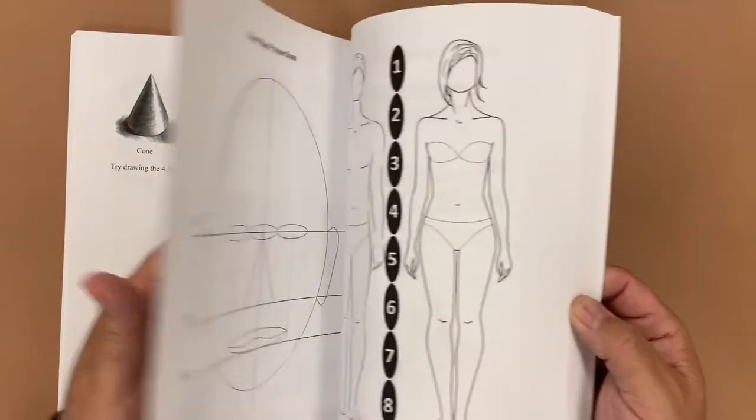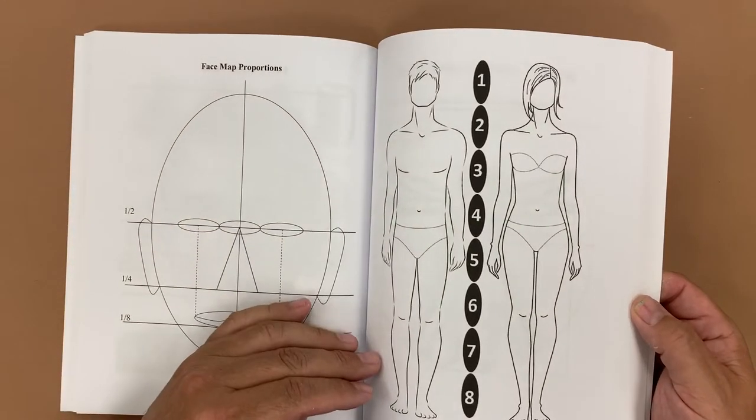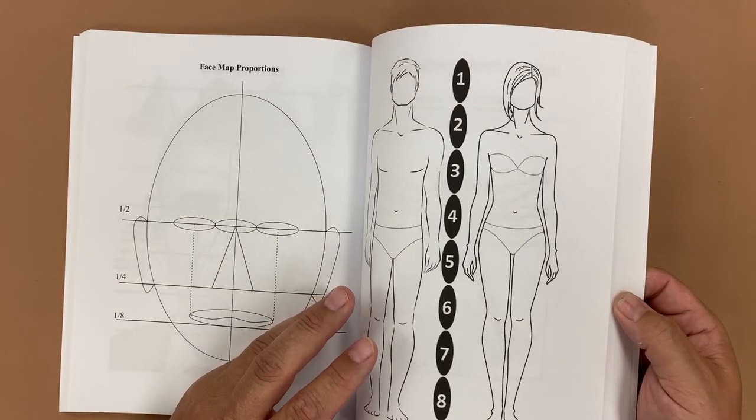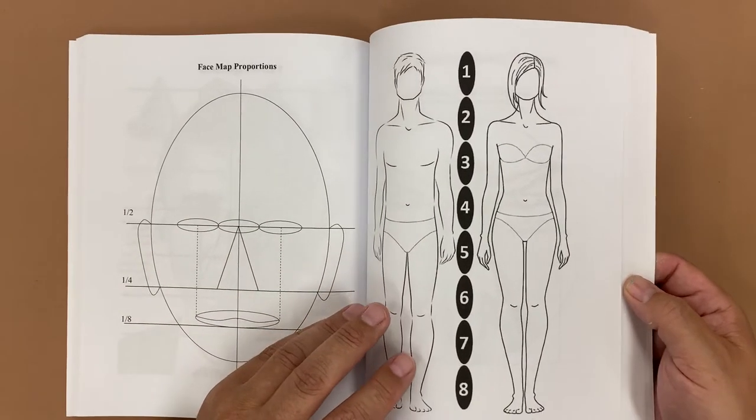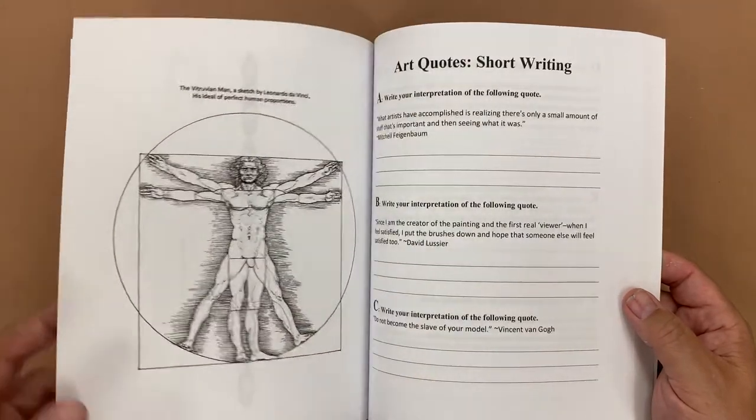Facial proportions are in here, so if they have a hard time with that, then we can use this as a reference. Body proportions in here doing the eight heads tall. Sometimes I do that for a fashion unit for my art one students, but if my advanced students are trying to do human form and they're kind of struggling with it, I can give them this page to use as a reference.